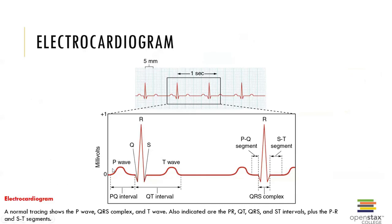The P wave is a small wave that corresponds to the depolarization of the atria and triggers the contraction of the atria. If we're missing the P wave in our EKG, that would suggest that our SA node has failed. If the sinoatrial node is not working properly or failing, that means there's something wrong with the ability of the atria to spread the electrical impulse — the action potential — generated by the SA node.